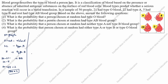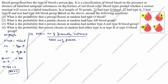First question: what is the probability that a person chosen at random had type O blood? O blood is 21. P of E is equal to number of favorable outcomes divided by total number of possible outcomes. Favorable outcomes is 21 O type blood, total number of possible outcomes is 50.